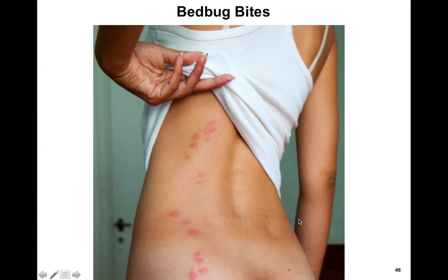This is showing an example of bed bug bites. You can see they typically bite in threes and in a row, and usually affect those regions of your body right on the bed sheet. You can tell this individual is probably laying on their side, which means the bed bug could crawl across the sheet and bite right at the exposed skin.